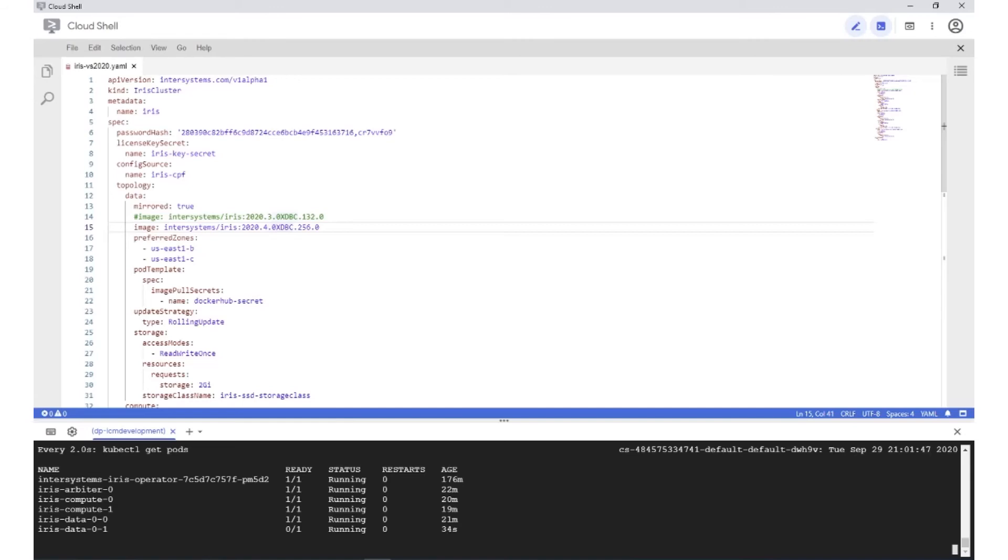Now as it happens, the first pod was the primary in the mirror set, and the second pod was the backup. After the backup gets recreated, it will still be the backup. But when the primary is recreated, it will come back as the backup, and the second pod will become the primary. So they're going to switch roles.